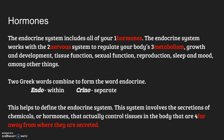There are two Greek words that combine to form the word endocrine. The first part of the word, endo, means within, and krino means to separate or apart from. This helps us to define what the endocrine system is. The system involves the secretions of chemicals, or hormones, that actually control tissues of your body that are far away or separate from where they are secreted.